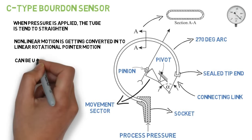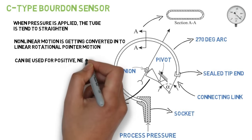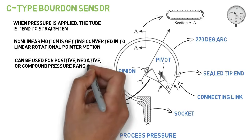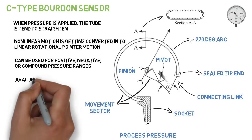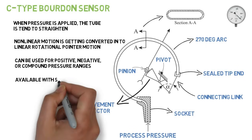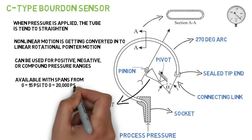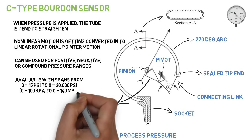C type Bourdon tube elements can be used for positive, negative, or compound pressure ranges, but the indication on the vacuum side will not be accurate or sensitive. C type Bourdon tube elements are available with spans from 0 to 15 psi to 0 to 20,000 psi.